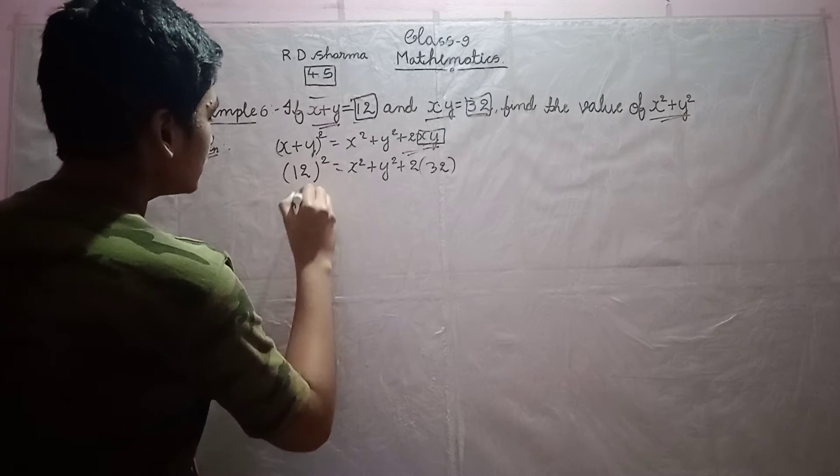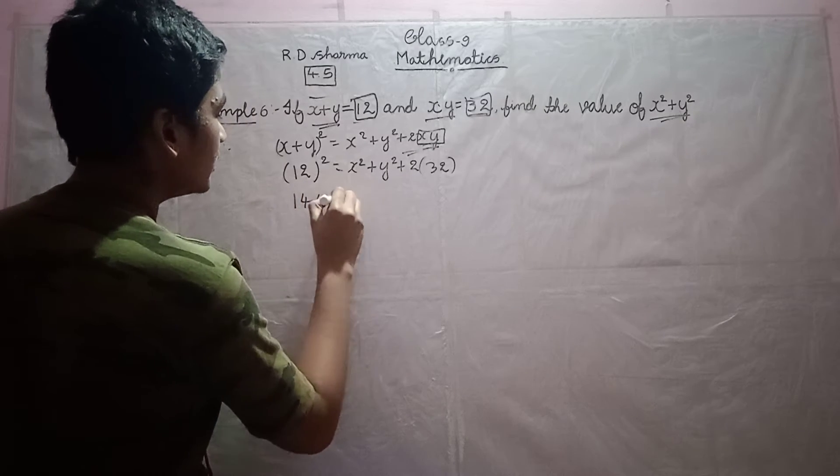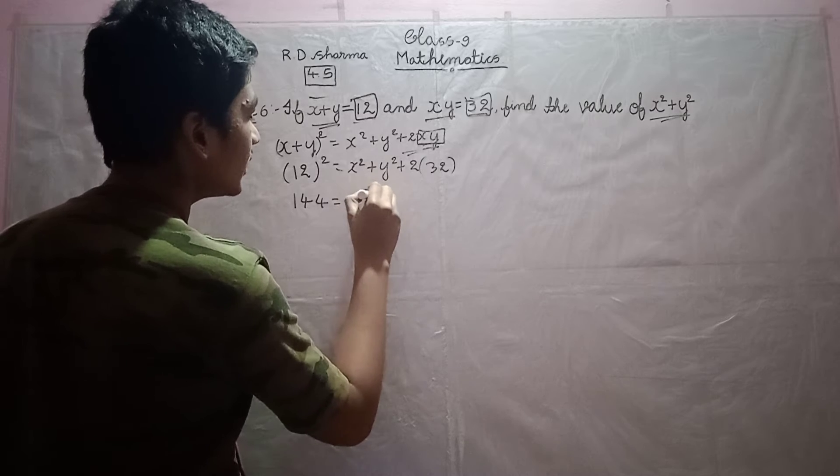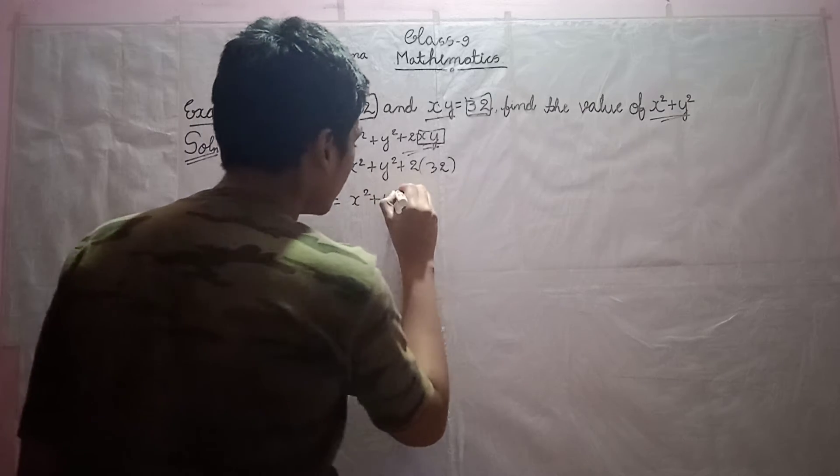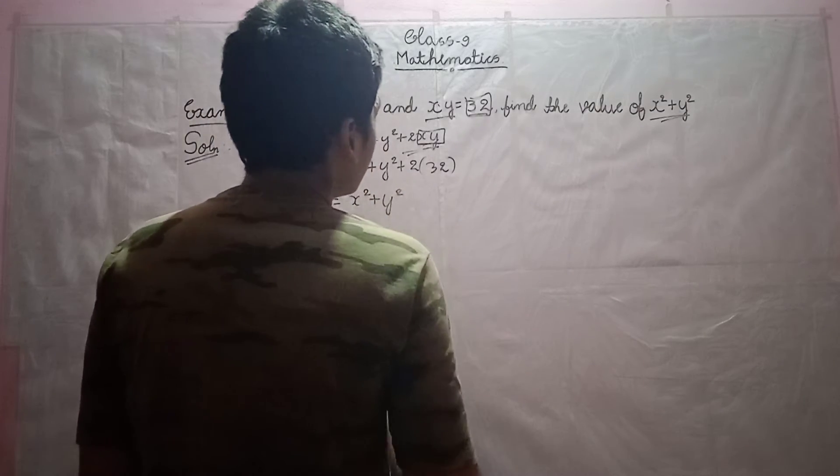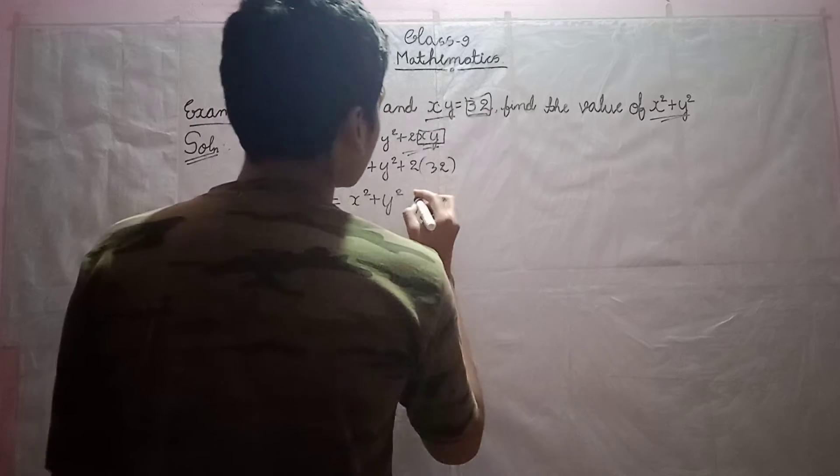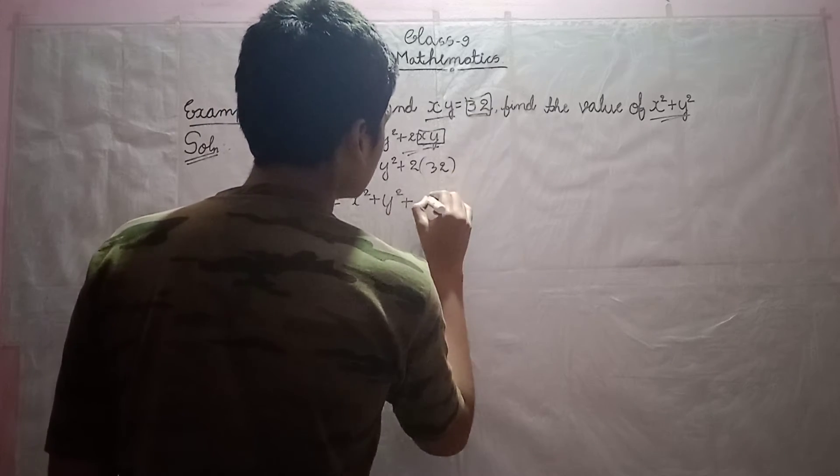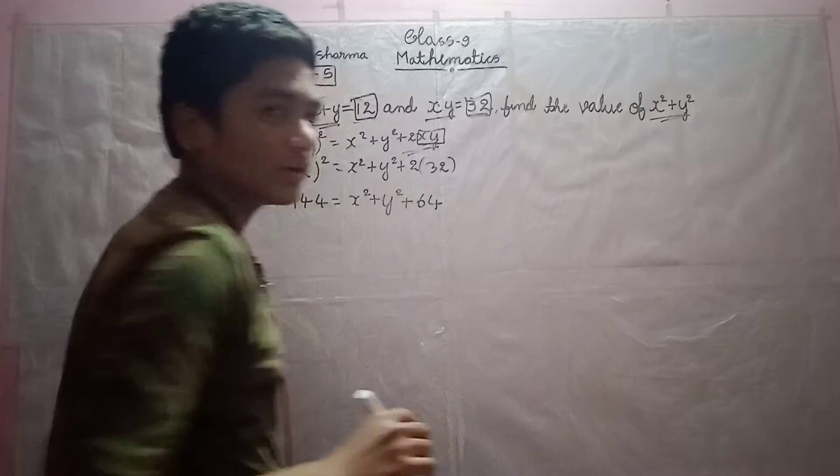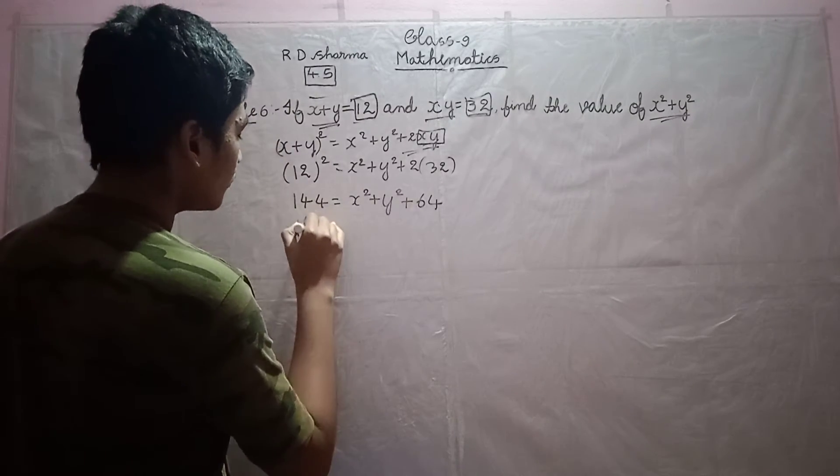Next is, what is 12 square? It is 144, is equal to x square plus y square. Next, plus 2 into 32 is plus 64, right? And next is 144.